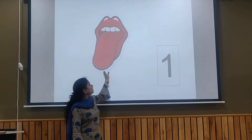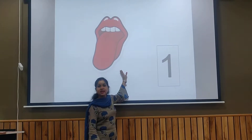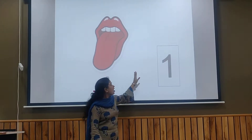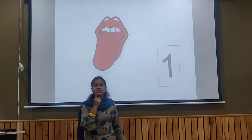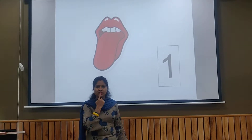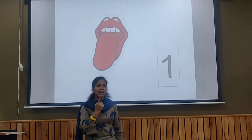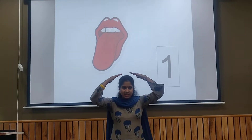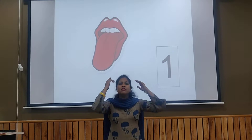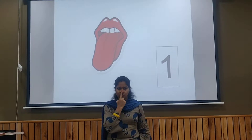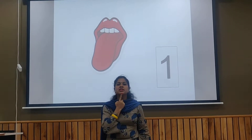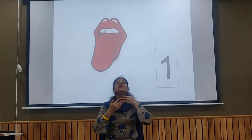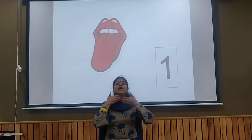And this is a tongue. How many tongues do we have? One. One tongue. And we have one head, one nose, one chin and one neck.